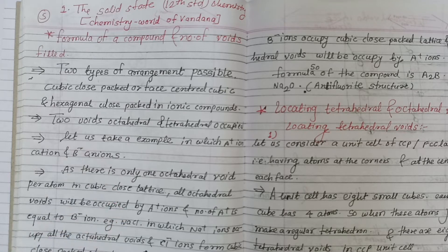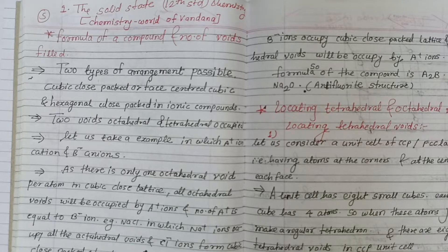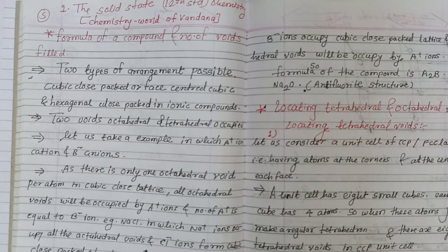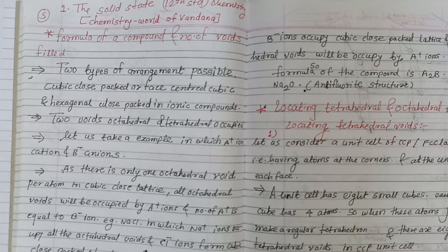An example of this is sodium chloride. So we will take a general example where A and B are ions. Here A+ occupies octahedral voids. In general, the number of octahedral voids will be occupied - meaning the number of octahedral voids equals the number of atoms.